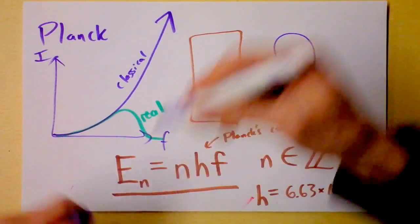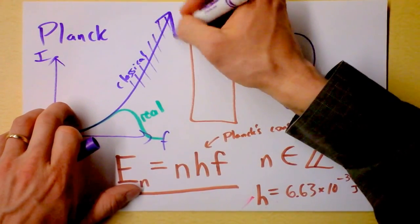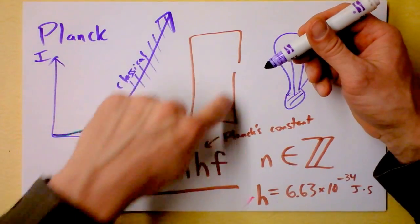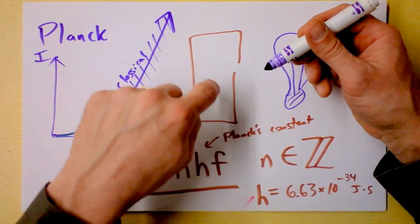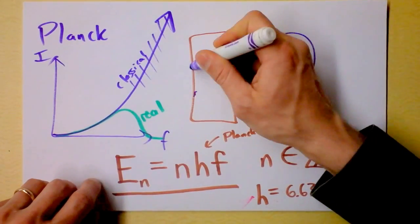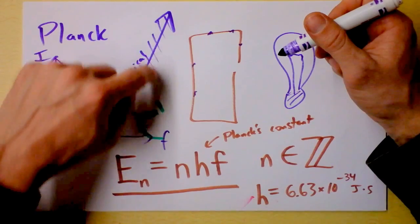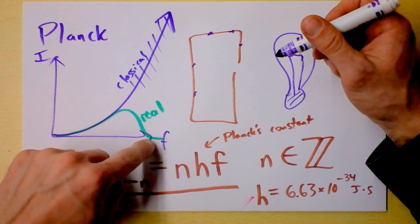He's saying that if we've got energy coming out of here, the reason that you don't get any of this classical behavior here is because the shaking that's happening inside this box, there's not enough energy present in the individual bits that are shaking to emit any light at higher frequencies than that.